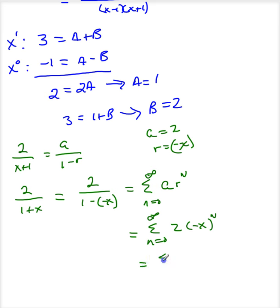Now I want to rewrite this as a sum as n goes from 0 to infinity of 2 times negative 1 to the n, x to the n, and indeed this is centered at 0.